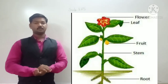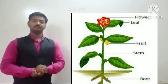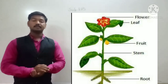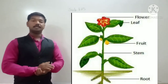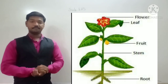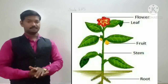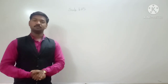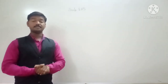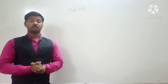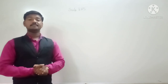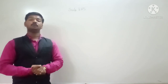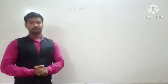As we know, plants are also living things. Like our body, plants also have different parts. They are mainly divided into two parts: root and shoot. Plants need air, water, and sunlight as well as food to grow and live.